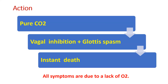Let us see the mechanism of action. With pure CO2, there will be vagal inhibition along with glottis spasm, and this causes instant death. All other symptoms occur due to lack of oxygen — when there is an increased concentration of carbon dioxide, there is a lack of oxygen, and with this, all the symptoms occur.